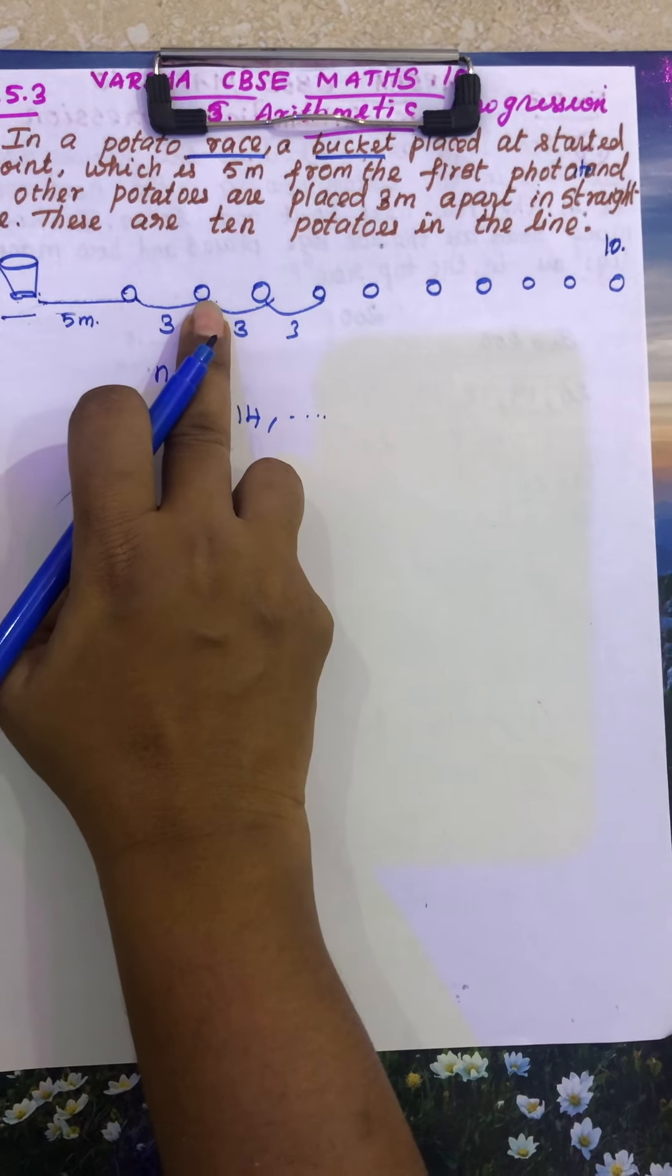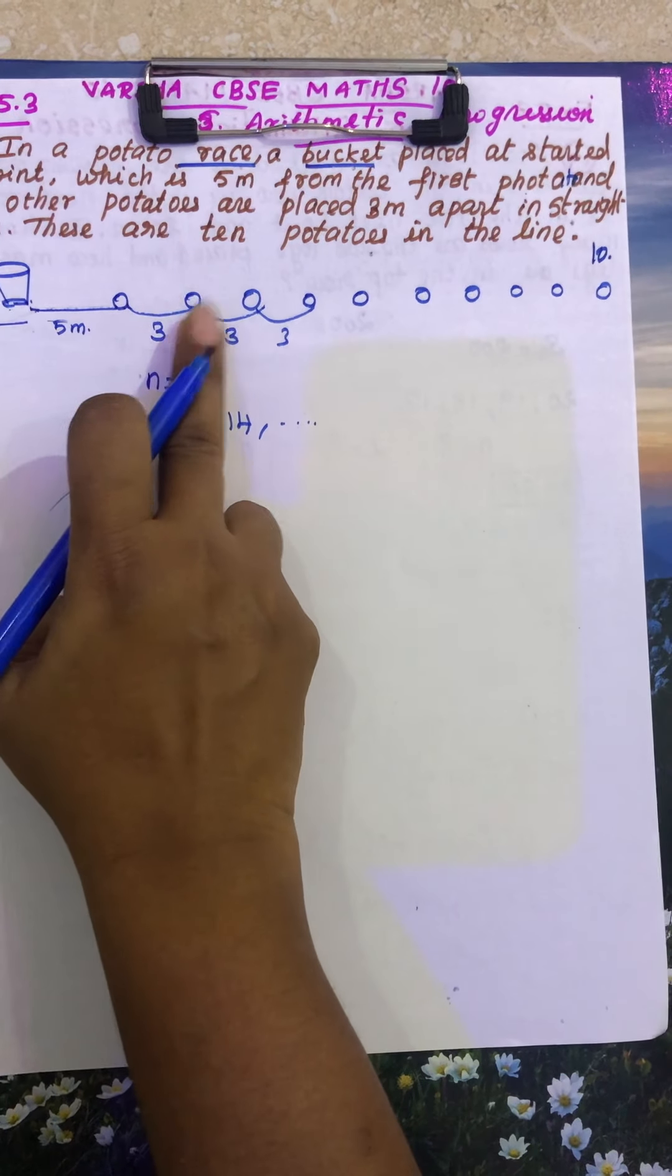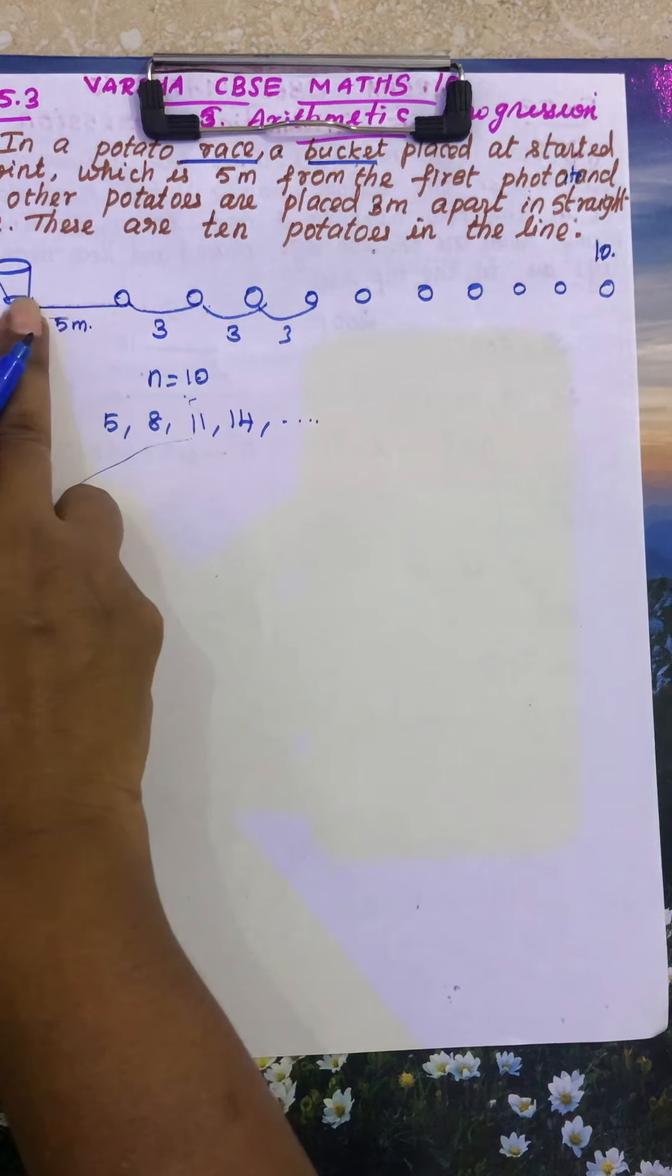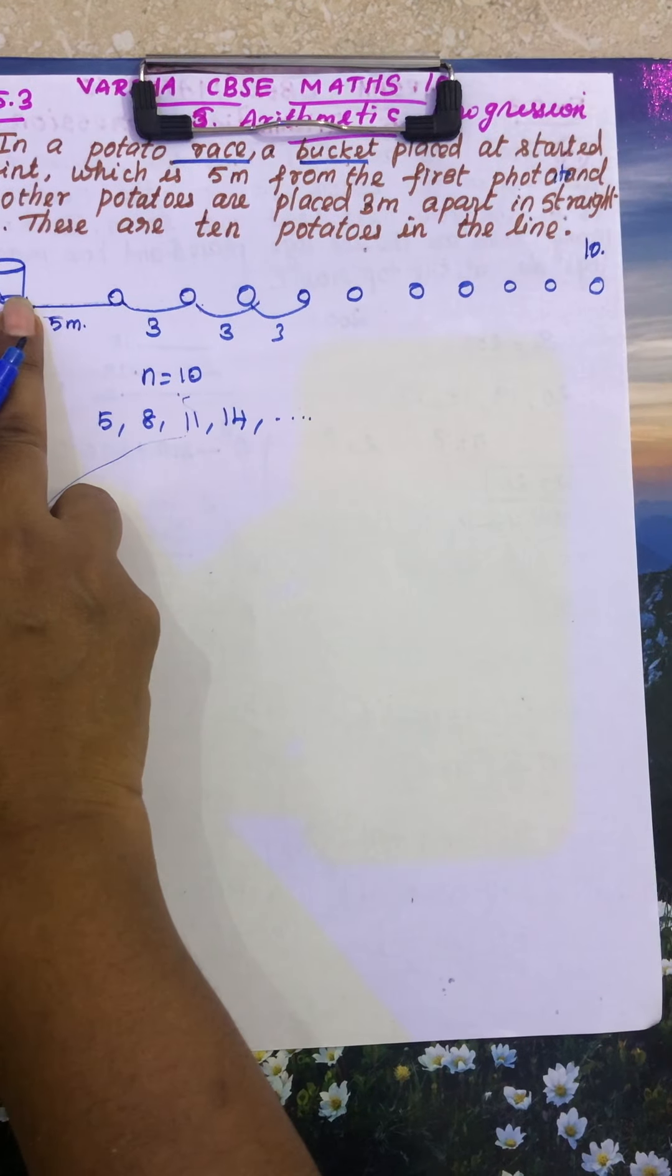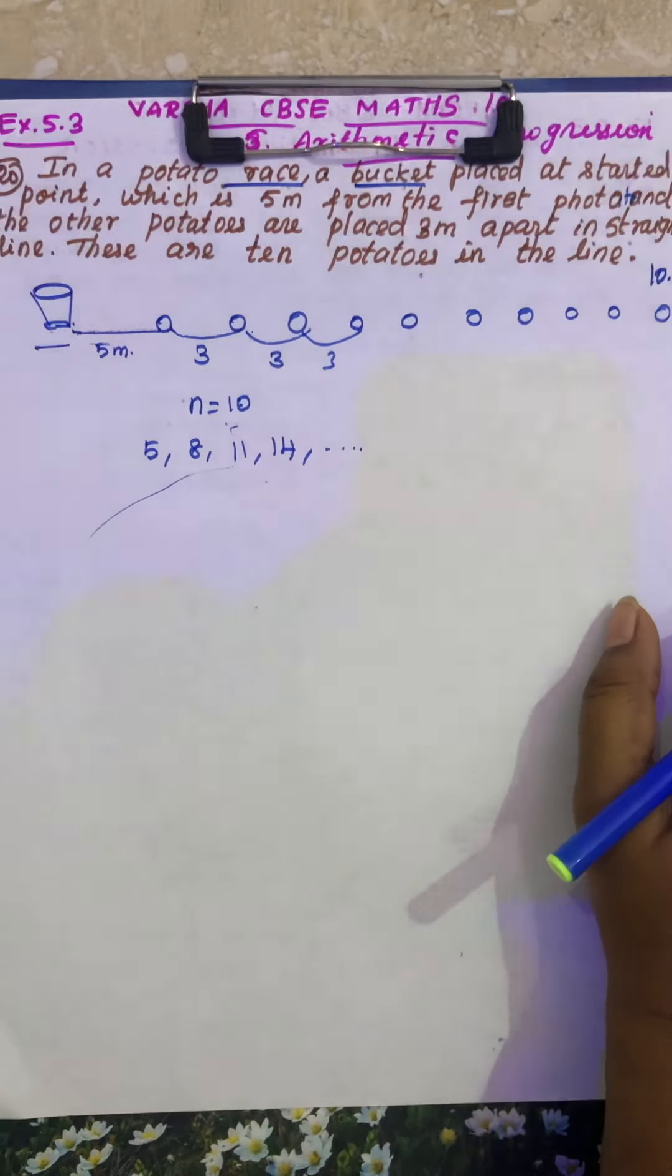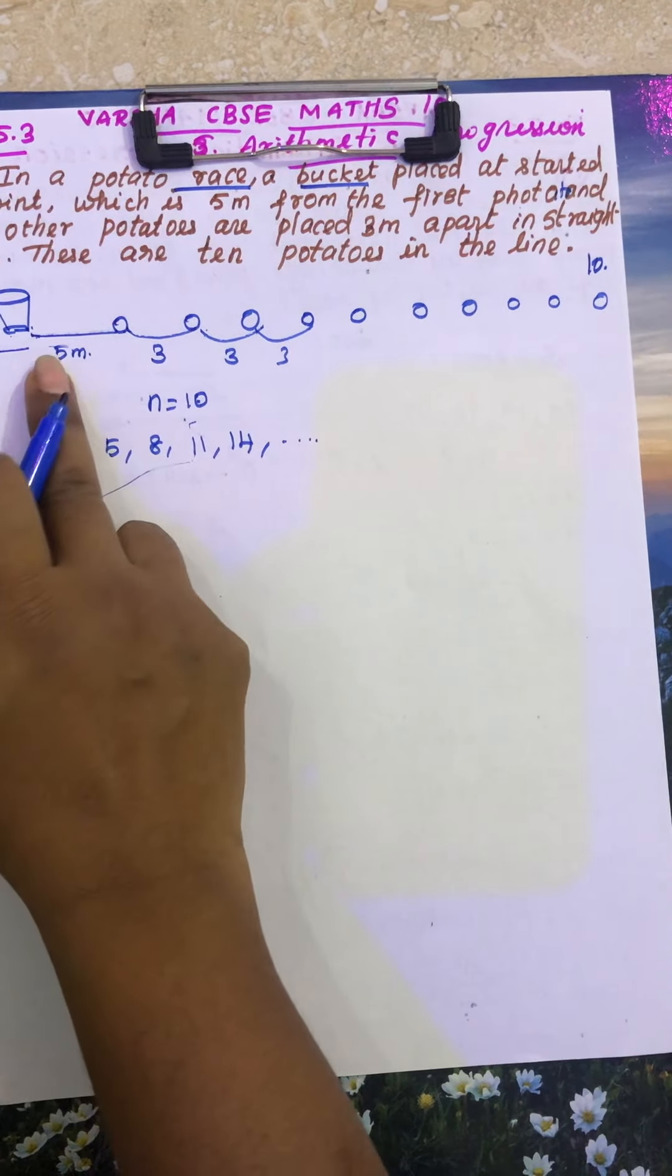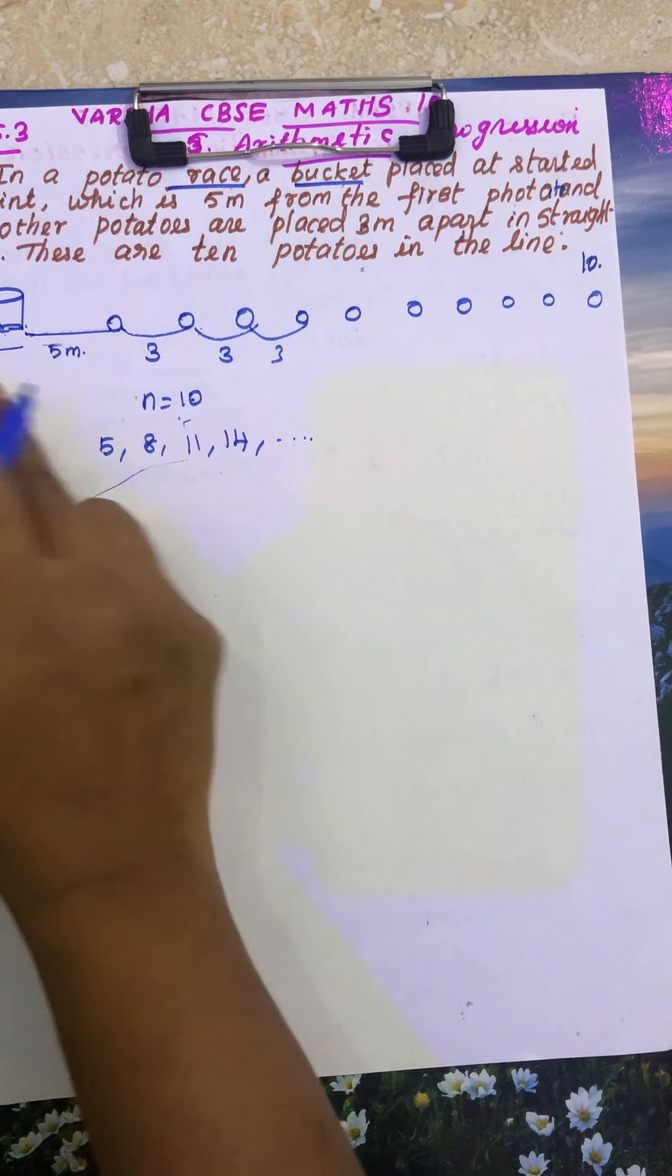The next, to take the second potato, she has to go from this point, how many distance, 8, return back 8, so totally 16. So how many distance she has to pass, that is our question. So this is only one way, but you have to take another way, returning back.